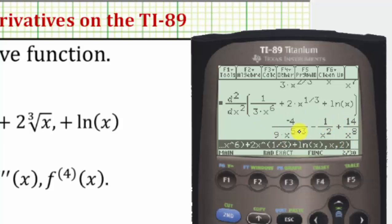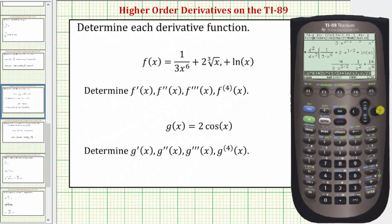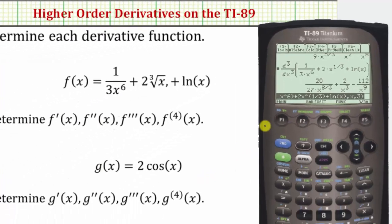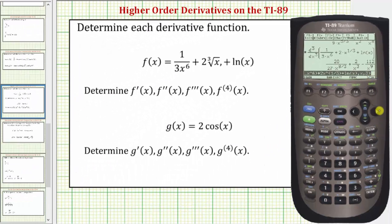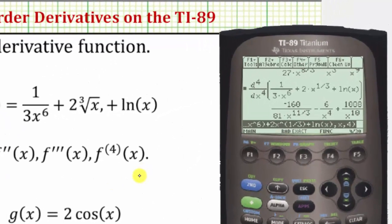If we change the two to a three, we'll get the third derivative; if we change it to a four, we'll get the fourth derivative. So again, press the right arrow, left arrow once, backspace once, enter three for the third derivative, and press Enter. F triple prime is equal to this function here. And then finally to find the fourth derivative, we change the three to a four — right arrow, left arrow, backspace, four, Enter. The fourth derivative is equal to this function here.